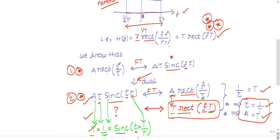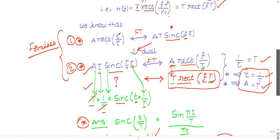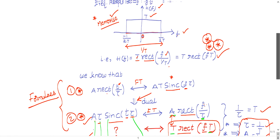Please try to memorize these two Fourier transform formulas so that you can answer the question within one minute in the exam. In this exam, there are 90 questions and the duration is 90 minutes, so each question takes one minute. Try to memorize these two formulas and you can answer any such question. Thank you.